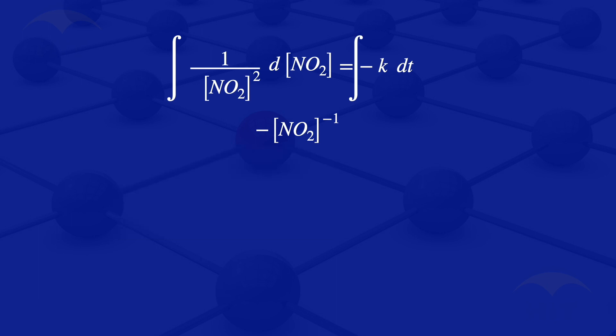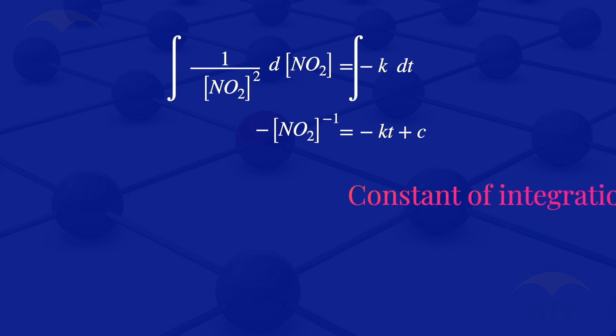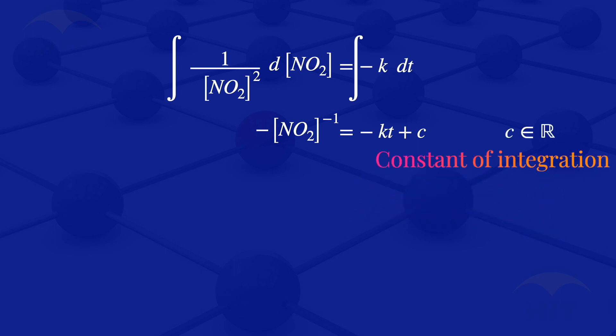Then looking at the right-hand side integral: the integral of the constant minus K gives us minus KT. So we would have minus KT plus C, where C is a constant of integration.